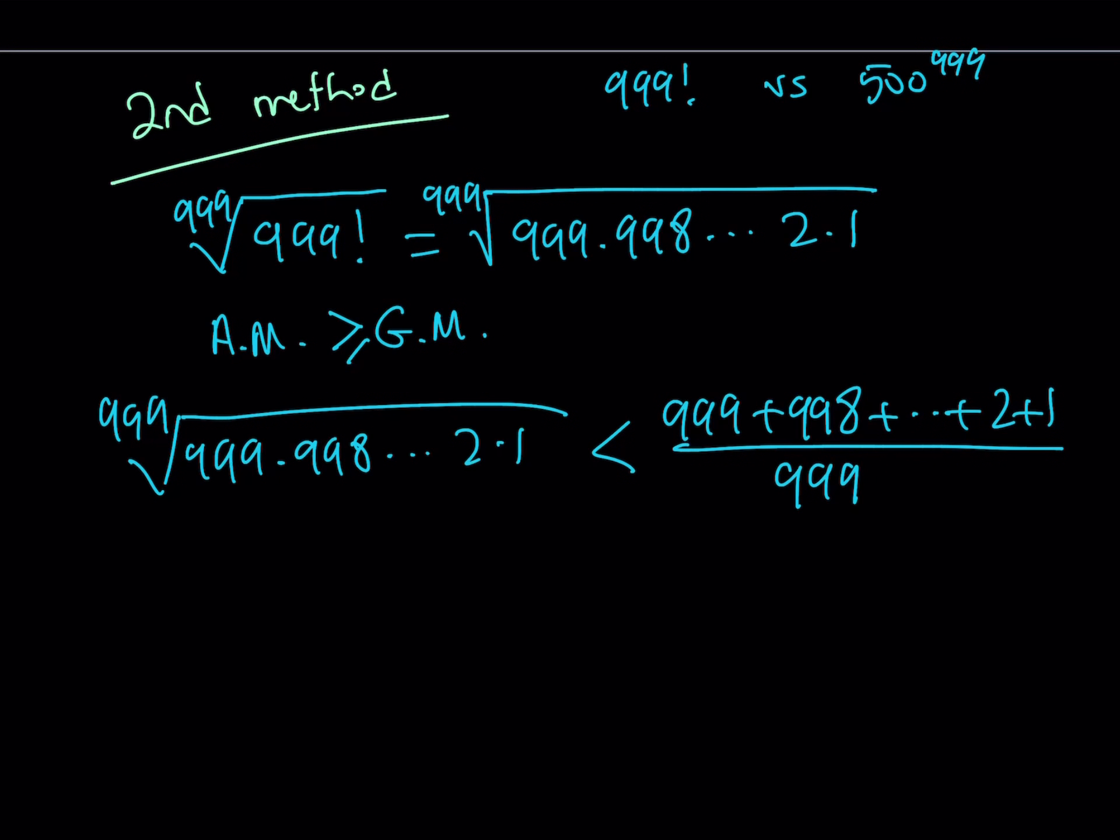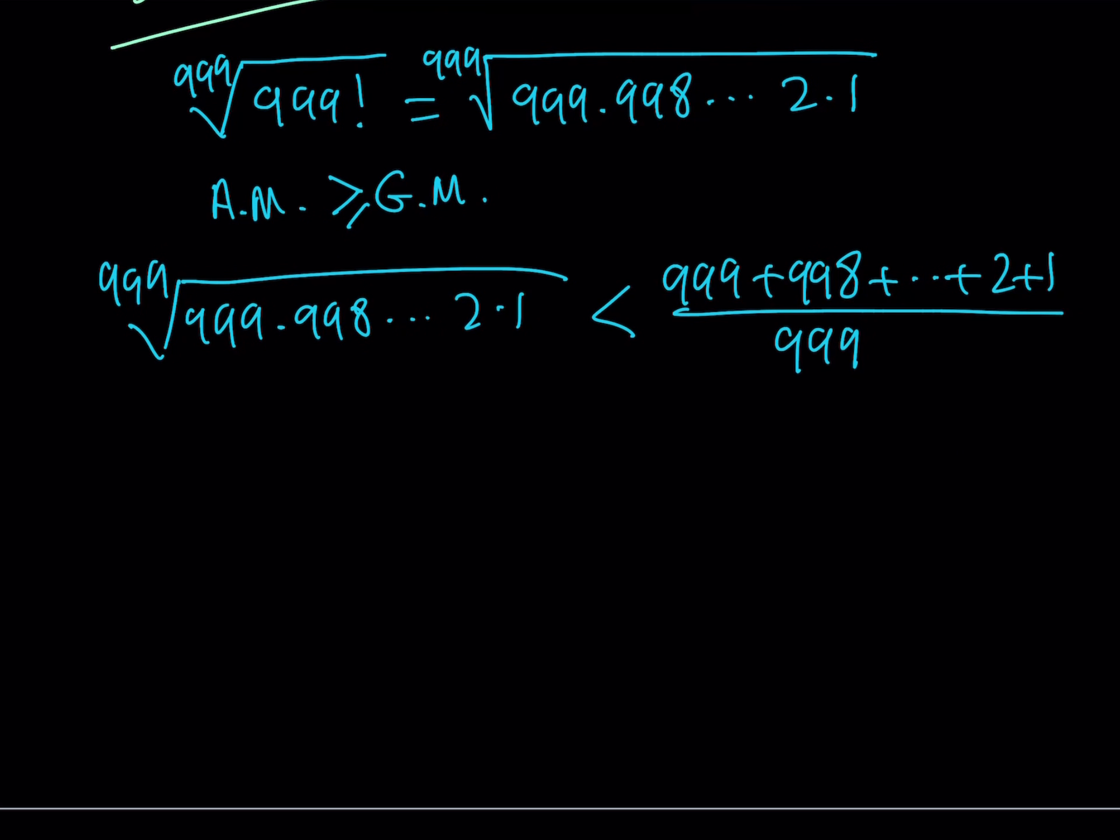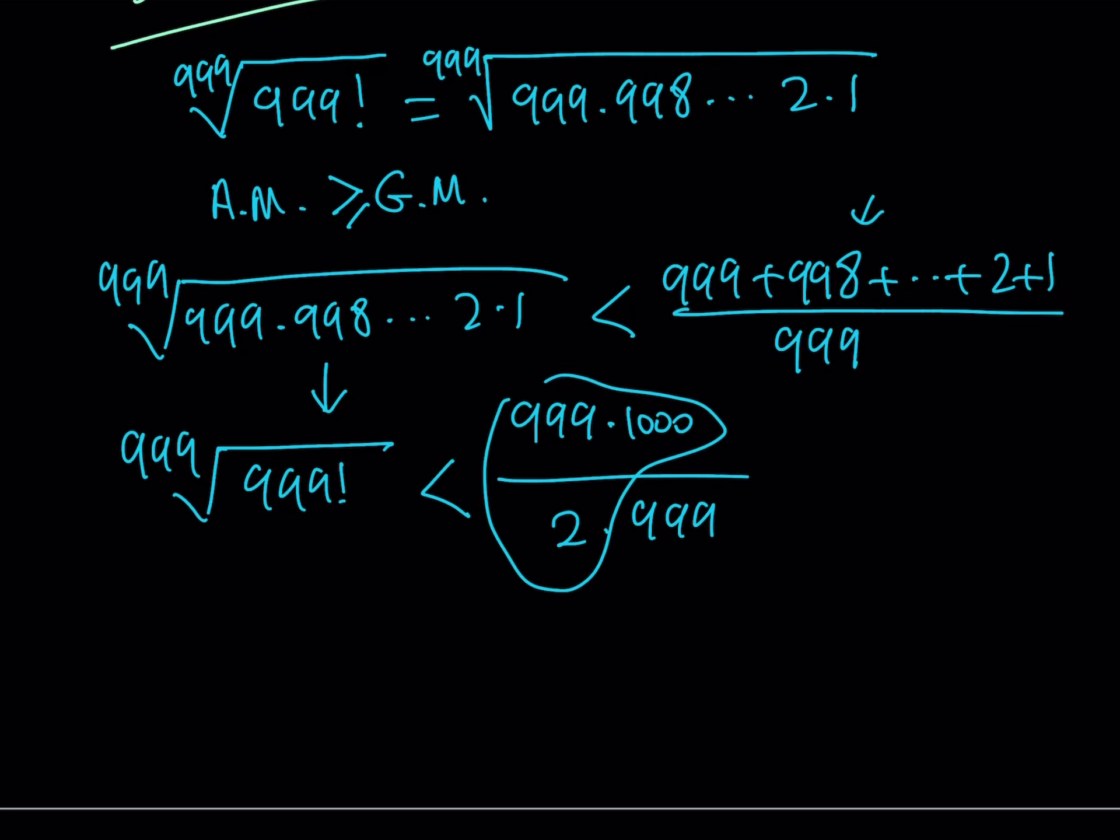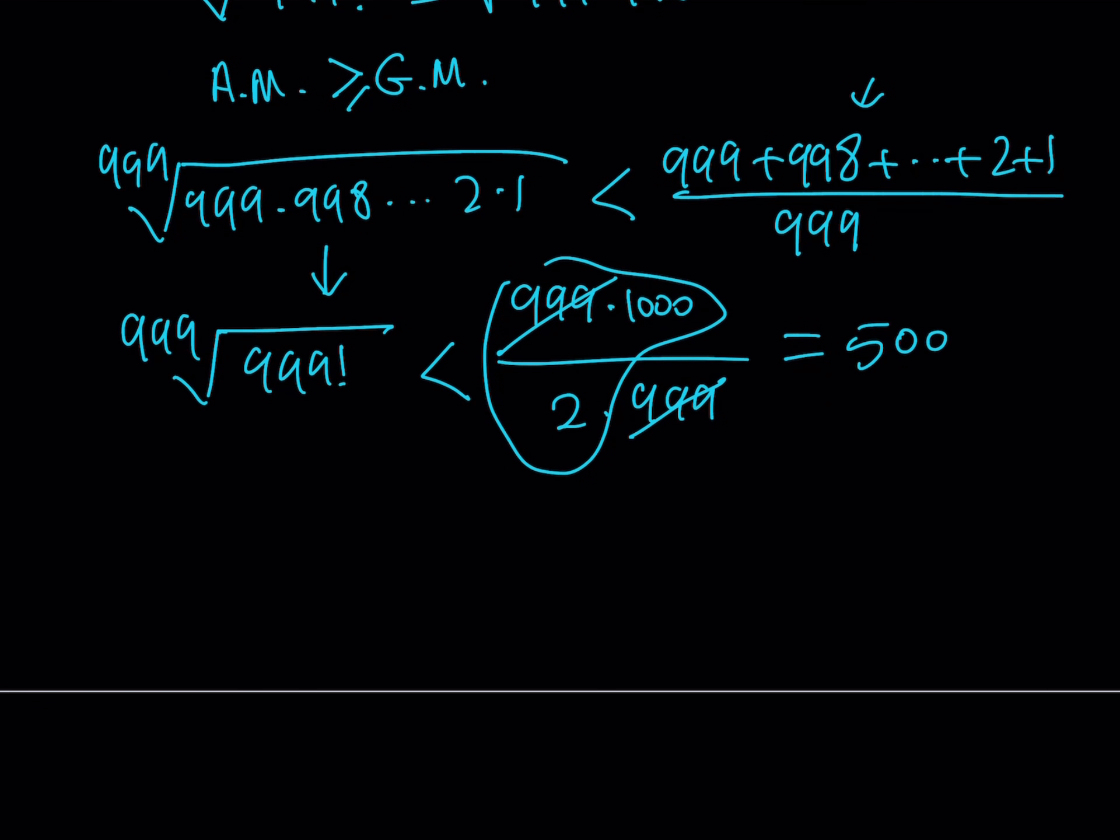So I can safely say that the 999th root of this product, which means the geometric mean of all these numbers, 999 numbers, is going to be less than the arithmetic mean, which is their sum divided by the number of numbers, which is 999. Now if you look at the top, it is actually n times n plus 1 divided by 2. So that sum can be expressed as 999 times 1,000 divided by 2, and I'm just dividing it by 999. 999 cancels out, and guess what? We're getting 500 here. This result gives me the 999th root of 999 factorial is less than 500.